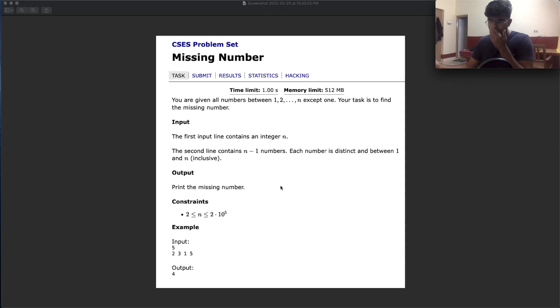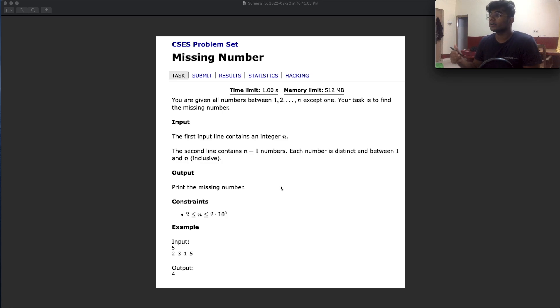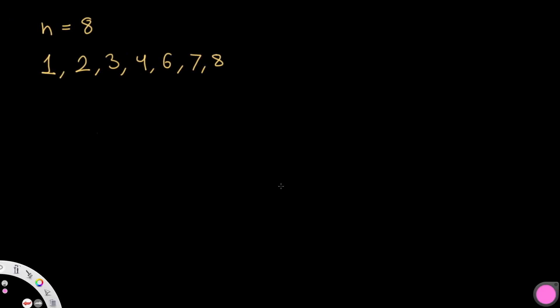This question is pretty straightforward. We're going to be given a set of numbers from 1, 2, 3, 4, so on and so forth until n, but one number is going to be missing. So let's take a quick example: if n is equal to 8, we're going to get 7 elements. We have 1, 2, 3, 4, but there's no 5. So 5 is the missing number — we have 6, 7, 8. In this case we would return the number 5.